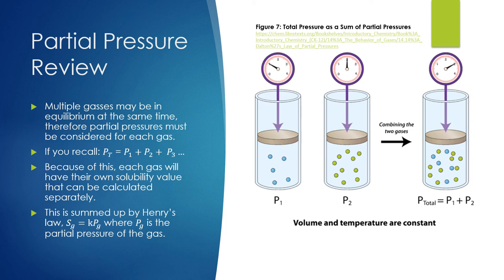It is important to note, however, that multiple gases could be in equilibrium at the same time, and this is where partial pressure comes in. Recall that the total pressure of the gases is equal to the sum of the individual partial pressures of every gas combined. Because of this, each gas contributing to the pressure over the solution will have their own separate solubility value which can be calculated.